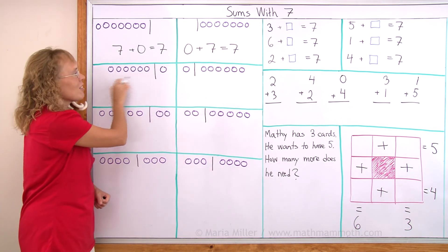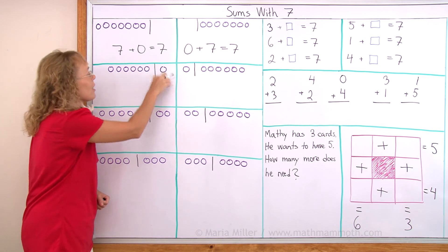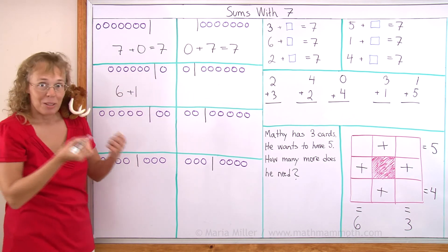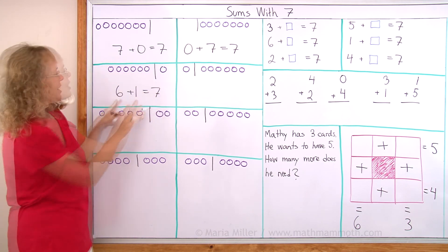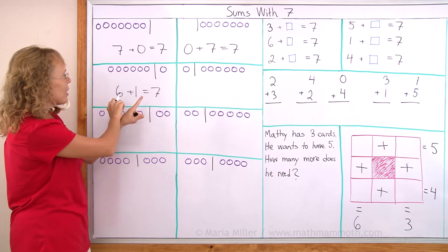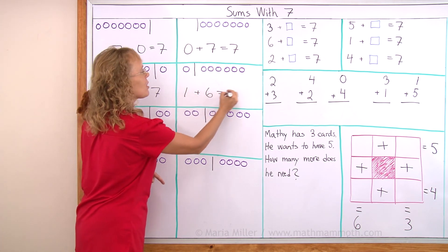Over here there are six on this side of the line and one here. Six and one together make seven. And you can guess what goes here, right? Just take these two numbers and flip them. You get one and six equals seven.